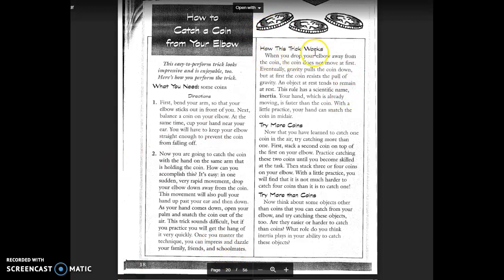How this trick works. When you drop your elbow away from the coin, the coin does not move at first. Eventually, gravity pulls the coin down, but at first the coin resists the pull of gravity. An object at rest tends to remain at rest. This rule has a scientific name, inertia. Your hand, which is already moving, is faster than the coin. With a little practice, your hand can snatch the coin in midair.